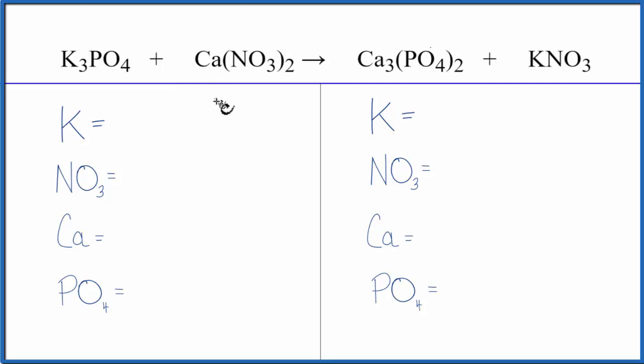When we have these double displacement reactions, there's a little trick we can use to help us balance the equation. If we have a polyatomic ion like phosphate here, the PO4, and we have it here, we can just count it as one thing. Same for nitrate. We have a nitrate here and then a nitrate here. We can just write NO3 and use that to balance the equation.